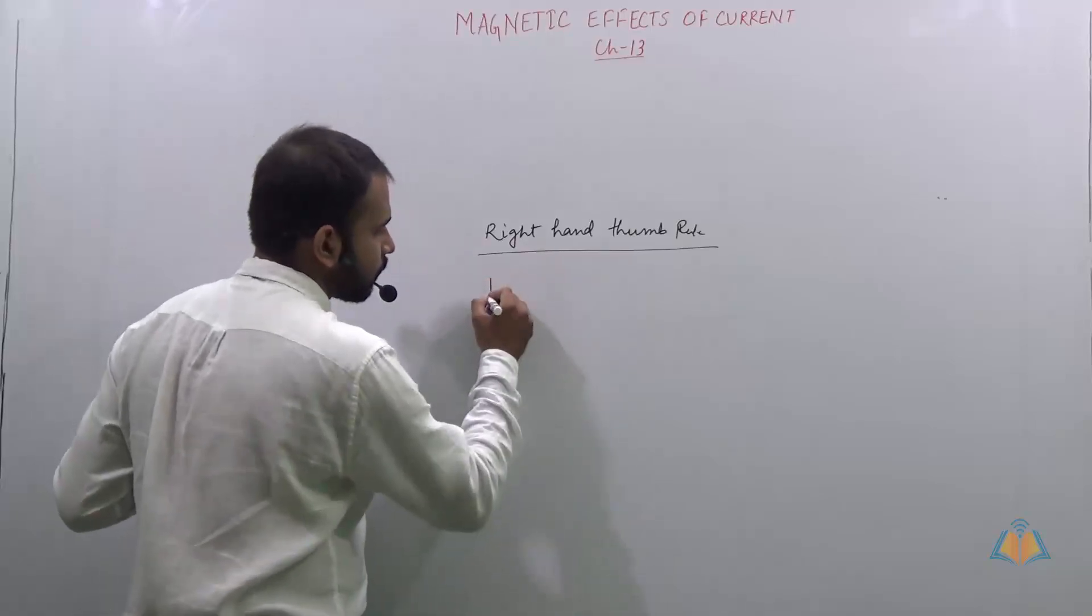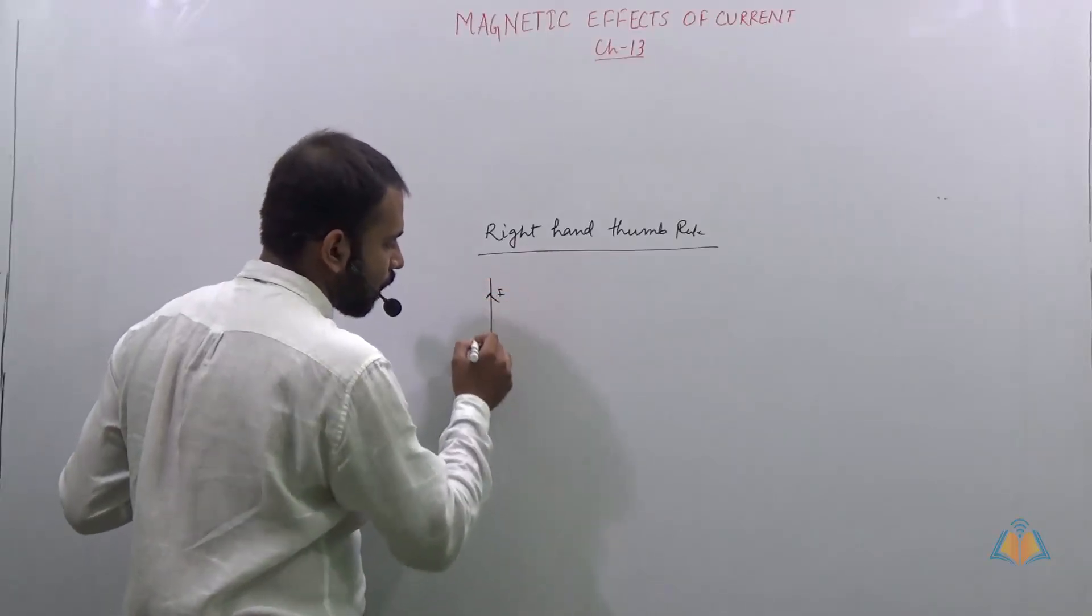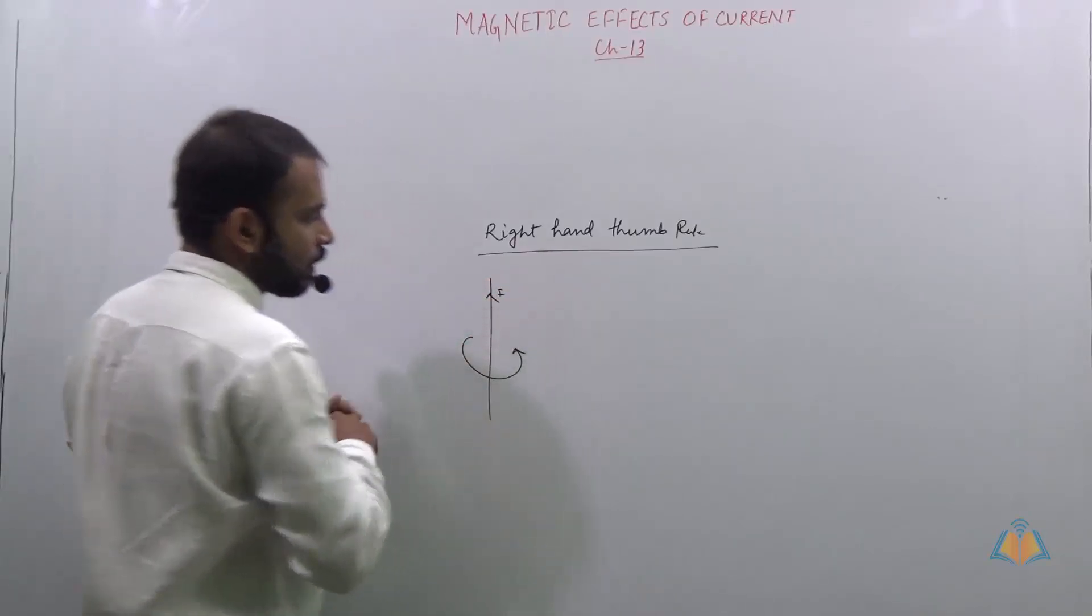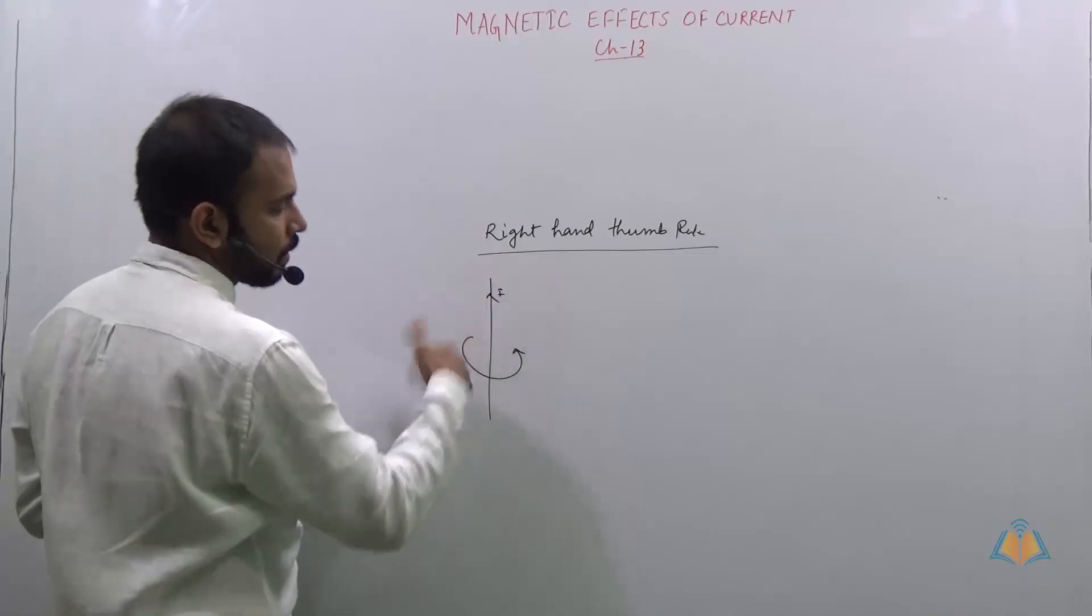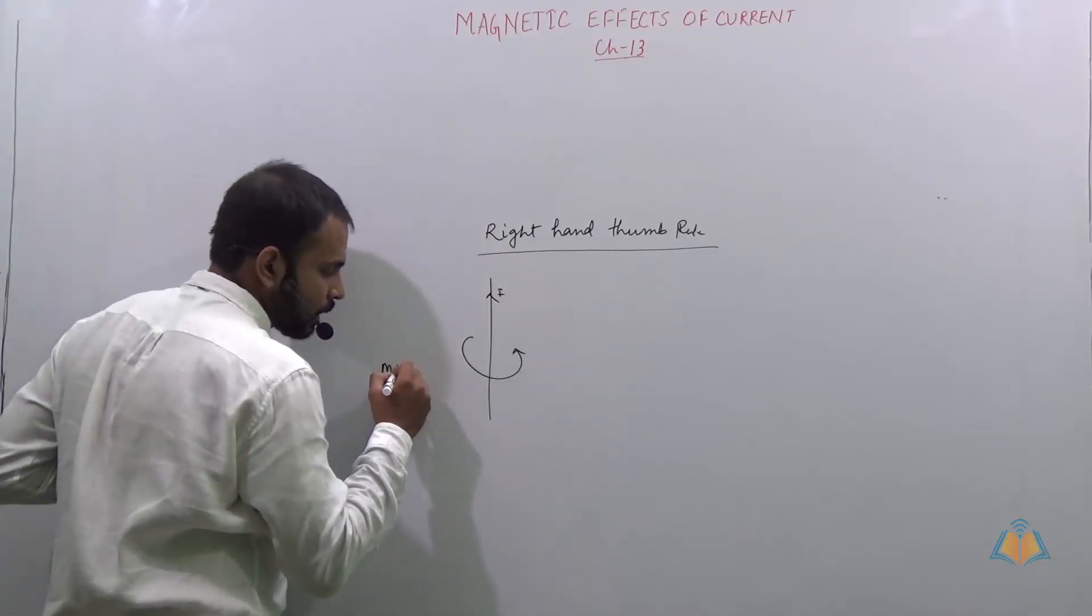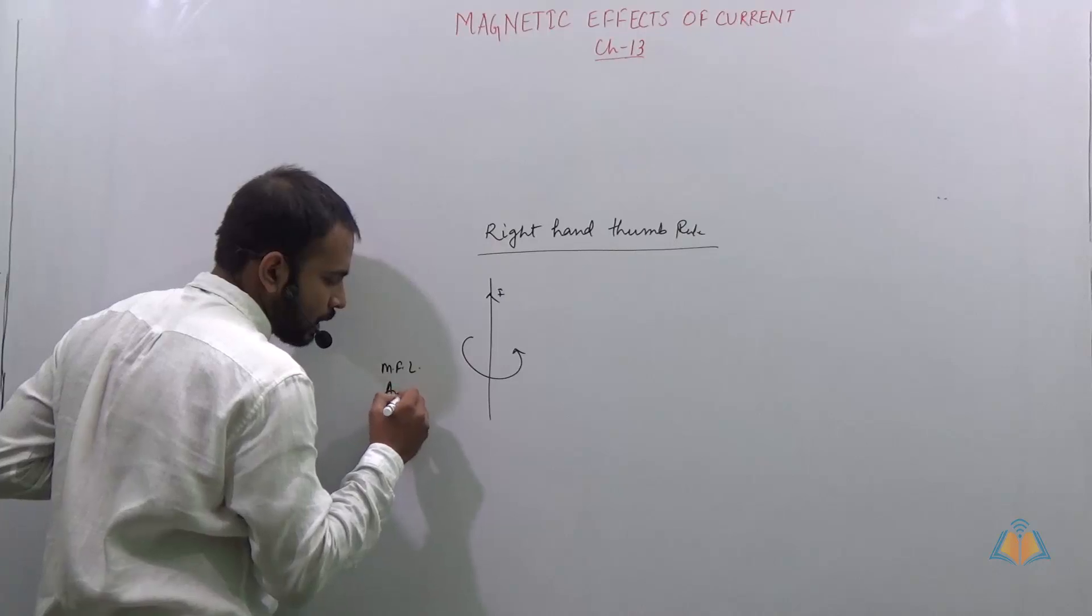Upwards, the current is moving upwards. How will it be? It will be like this here moving. How can we see it? We can say that magnetic field lines anticlockwise.